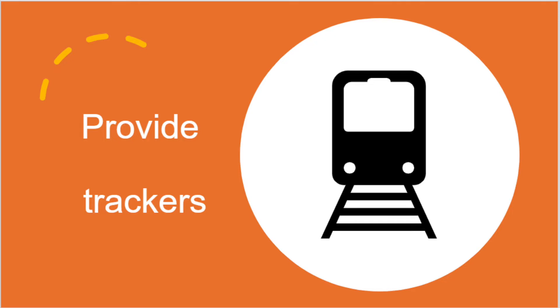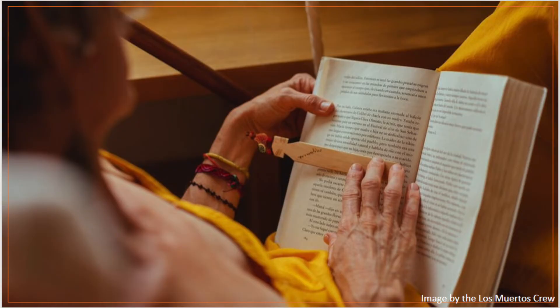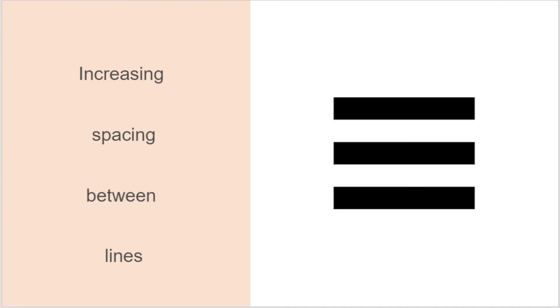Additionally, provide trackers. Trackers can include physical lines or other timed mechanisms for the purpose of visual guidelines. Another way to track is by increasing spacing between lines. This helps avoid letter overlap.